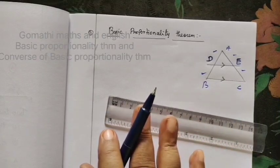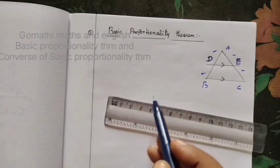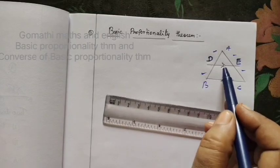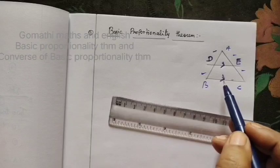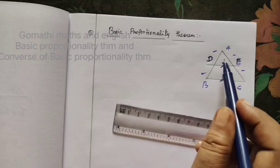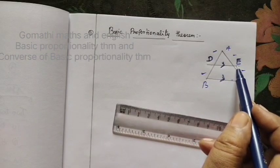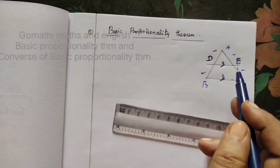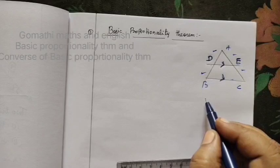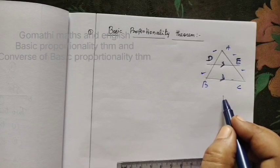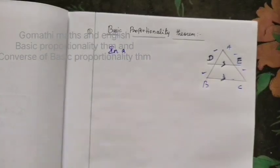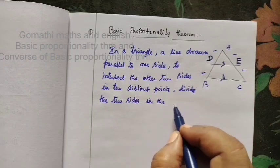This is the basic proportionality concept. In a triangle, a line drawn parallel to one side, intersecting the other two sides AB and AC in two distinct points, divides those sides in the same ratio. AD by DB equals AE by EC — we write the statement in the same ratio.